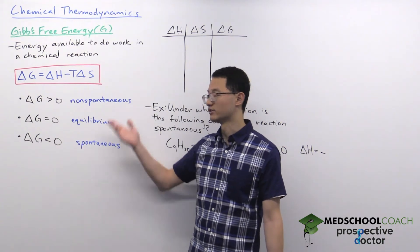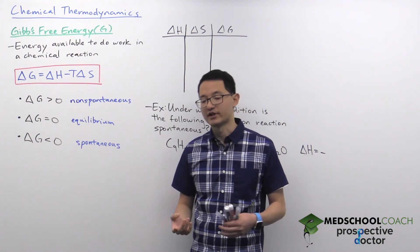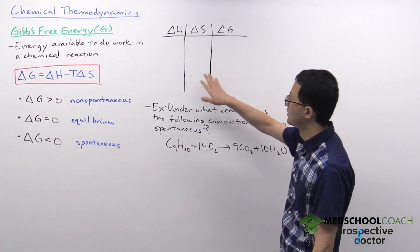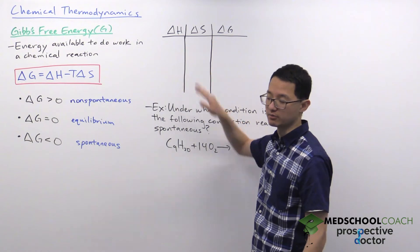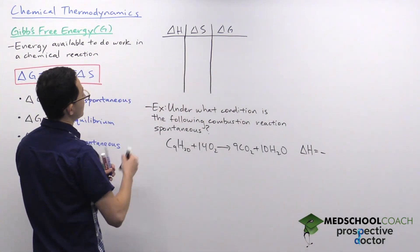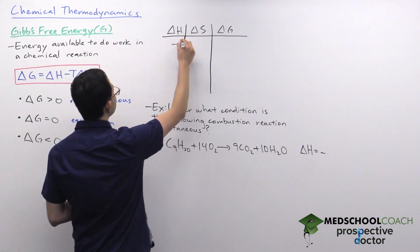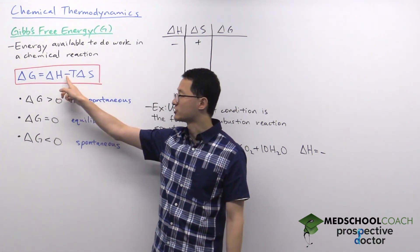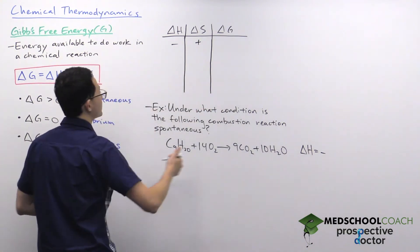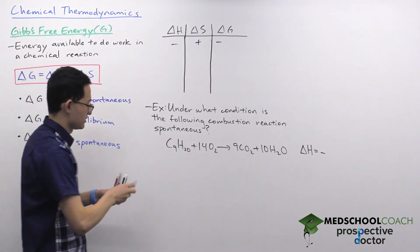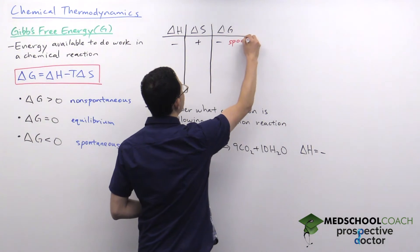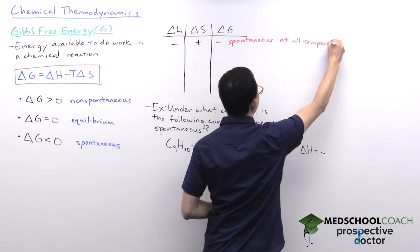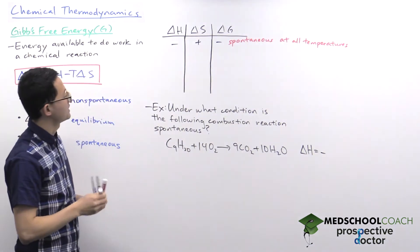With different variables in this equation, some reactions will always be spontaneous and others always non-spontaneous. We can see how this works with this table, looking at different combinations of enthalpy and entropy change. For instance, when enthalpy change is negative and entropy change is positive, the Gibbs free energy change is always going to be negative, so the reaction is spontaneous at all temperatures.